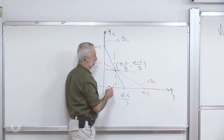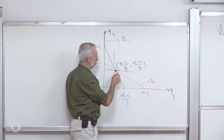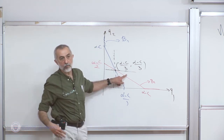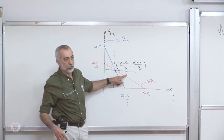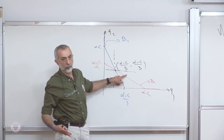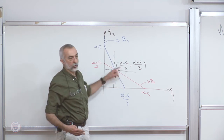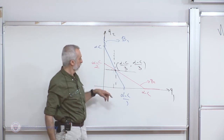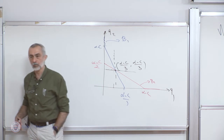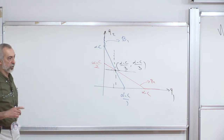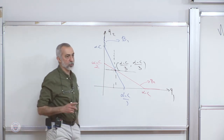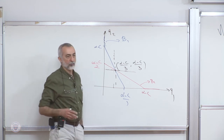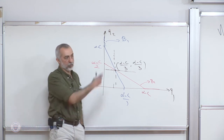Moreover, when we move from one point to another, if player one's payoff increases, we also have to make sure that player two does not become worse off. It's not only one player we check — we have to make sure that nobody becomes worse off and at least one agent becomes better off.